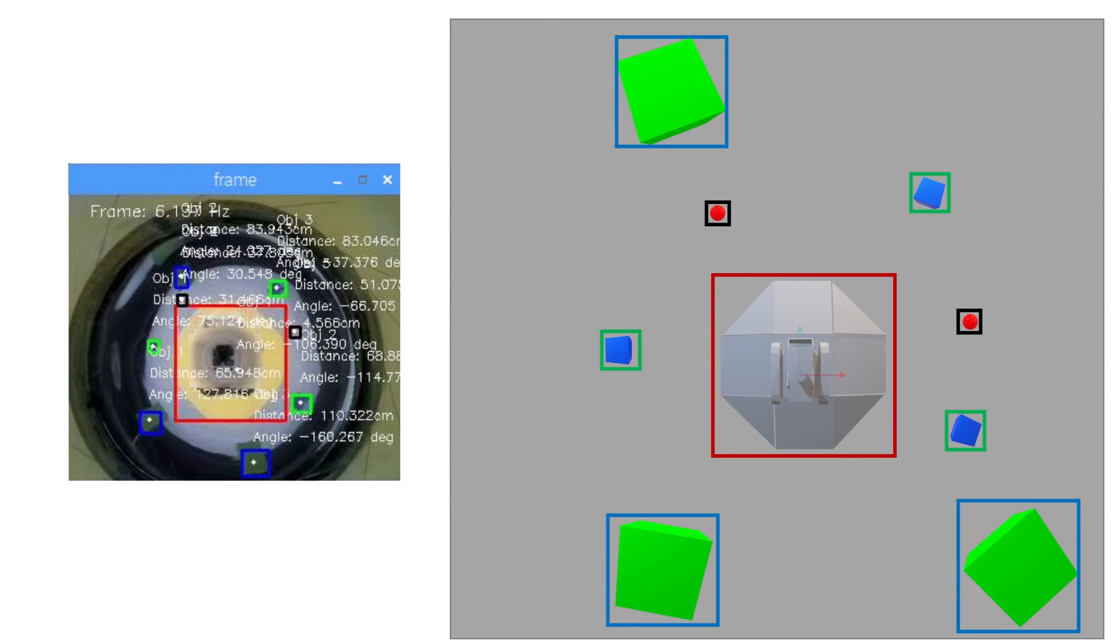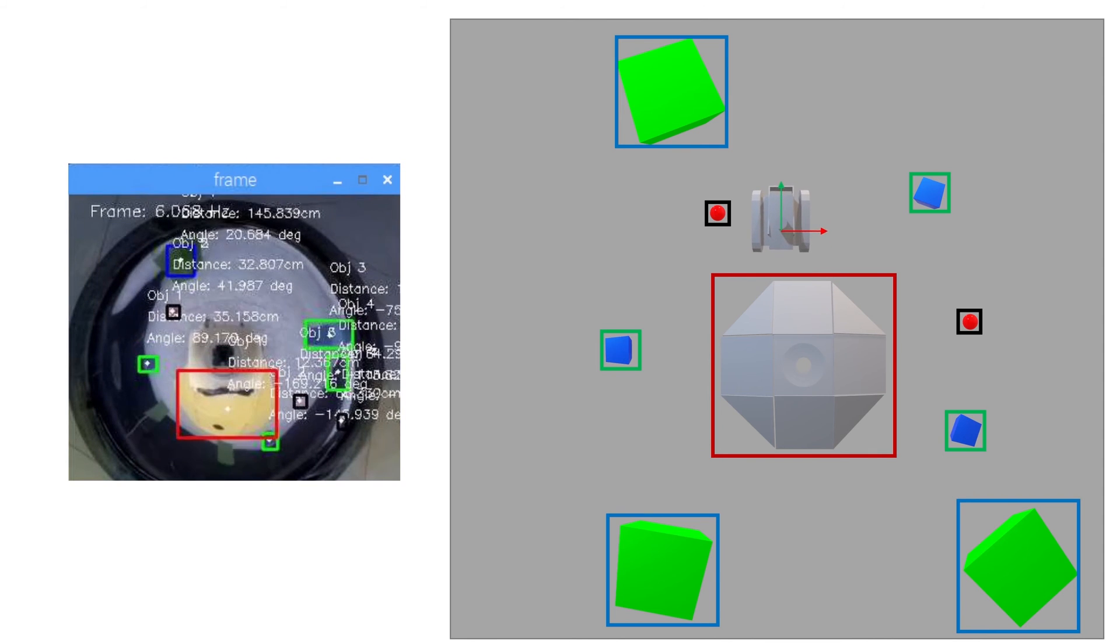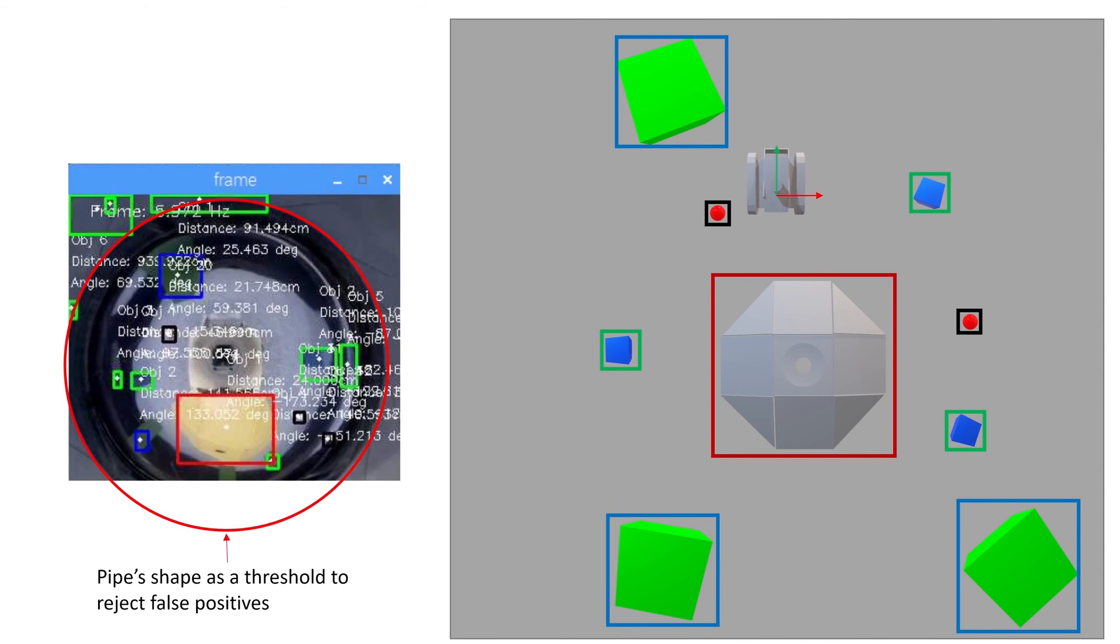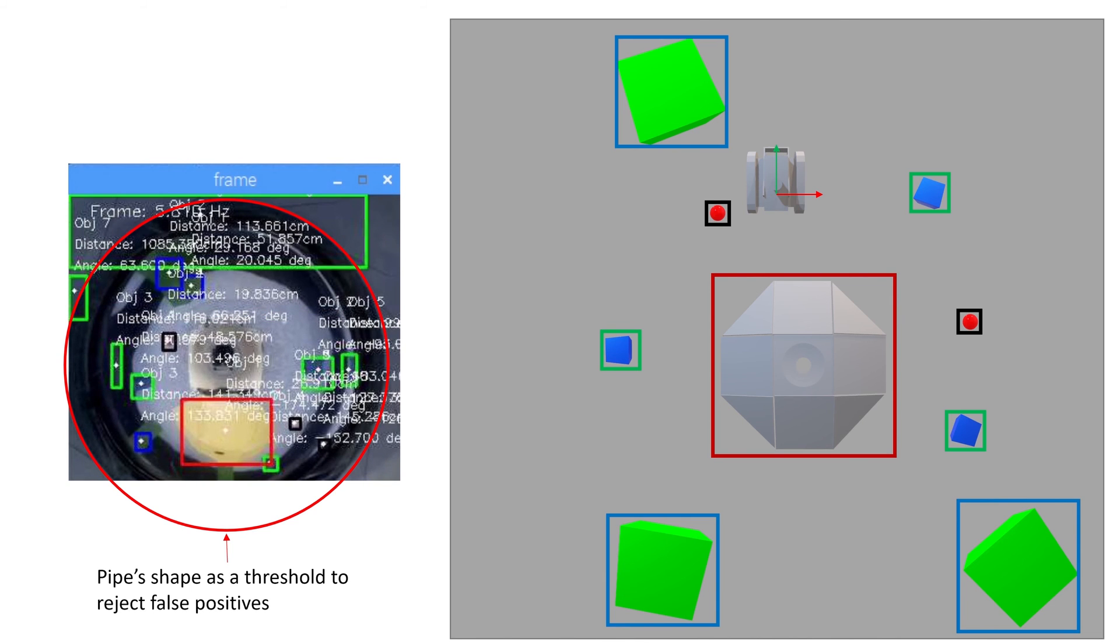The vision system identifies and localizes all objects of interest in the robot's frame of reference, calculating object's distance and bearings from the robot's center point. The circular shape of the pipe is used as a reference to reject any false positive readings as well as object's contour area.